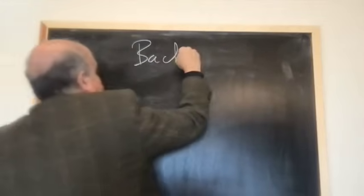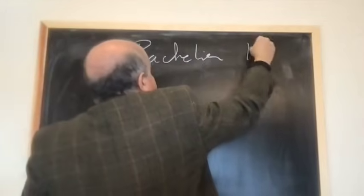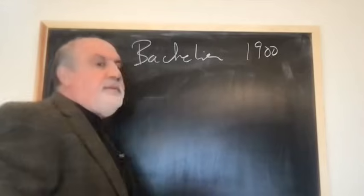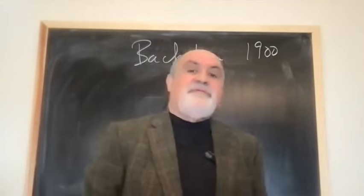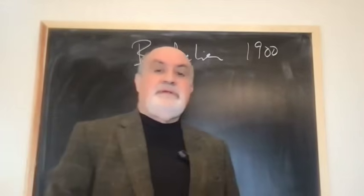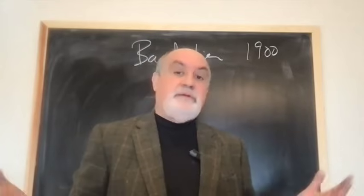So let me start with some chronology here with Bachelier. So Bachelier, 1900, he was an option trader, and then he did his doctorate in 1900 with Poincaré, the great Poincaré.